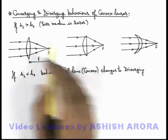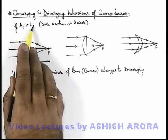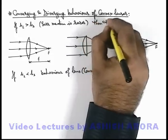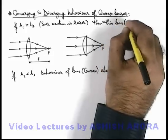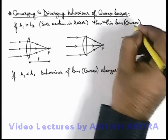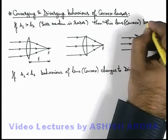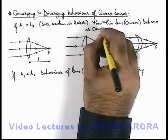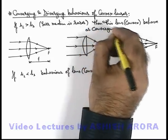Here we can write if mu of lens is more than that of mu of surrounding, then this lens, we are talking again about convex lens, behaves as a converging lens.